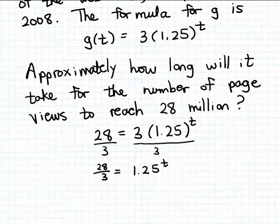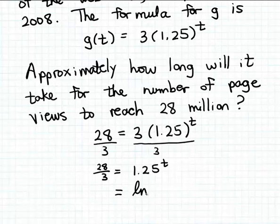This is an exponential equation since our unknown T is contained in the exponent of a power. I'm going to solve this by applying a log function to both sides so that I can remove T from the exponent. Let's apply the natural log function to both sides, although we could use the common log or a log with any base. So we have: natural log of 1.25 to the T power equals natural log of 28 over 3.